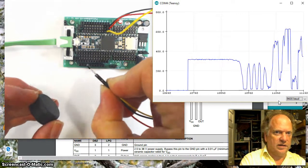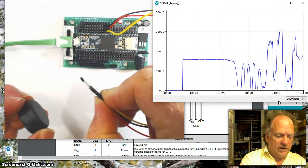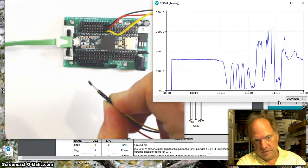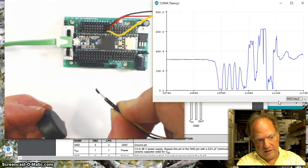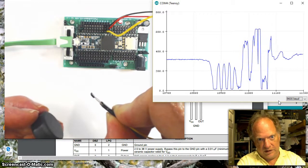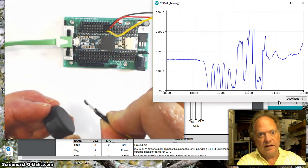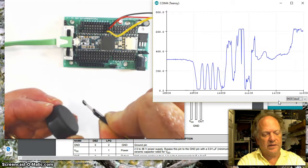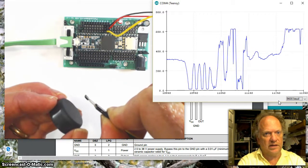So sensitivity wise, it starts picking up this magnet pretty far away. Something in the order of about three centimeters or so. And it peaks out at about a centimeter, centimeter and a half, something like that.